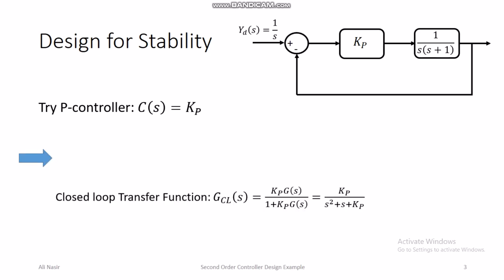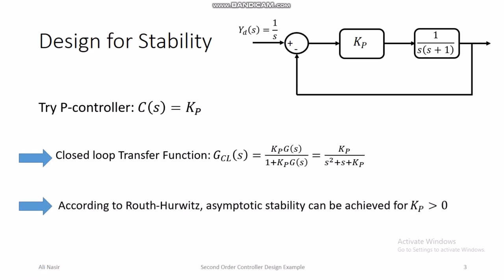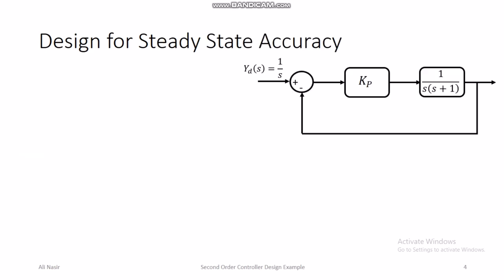With the P controller, the closed loop transfer function becomes kp / (s² + s + kp). According to the Routh-Hurwitz criteria, closed loop asymptotic stability is achieved for any positive value of kp.